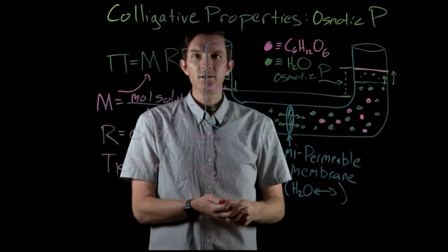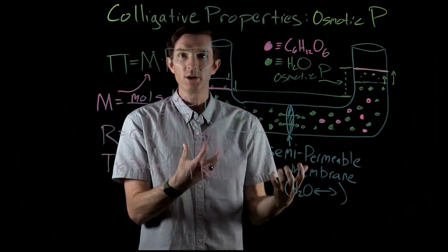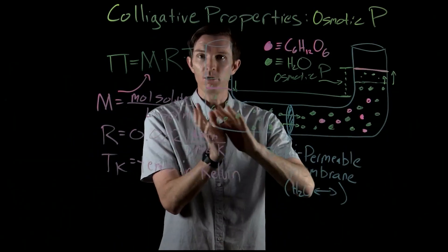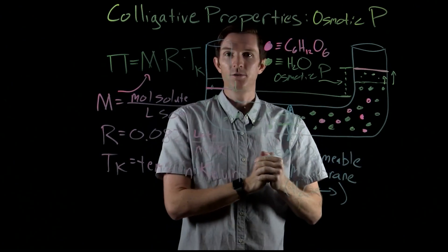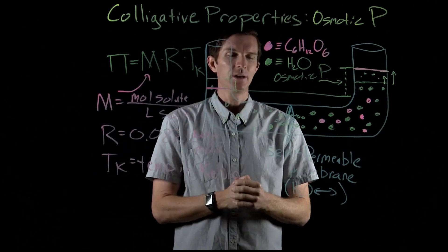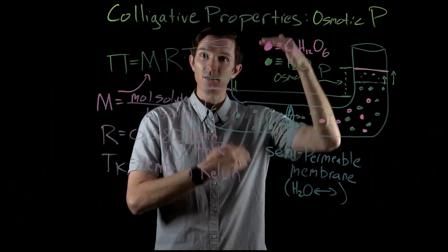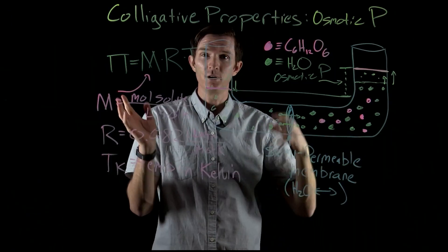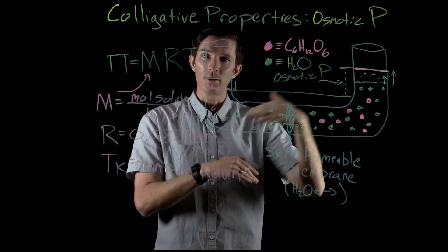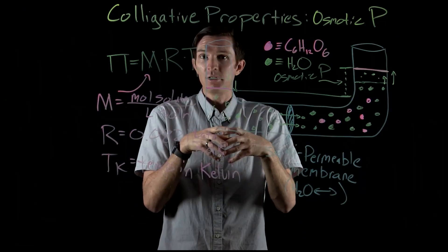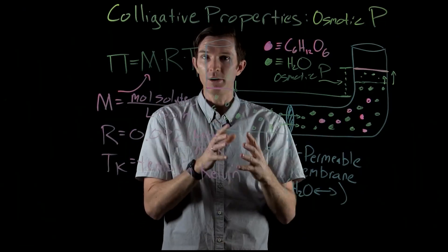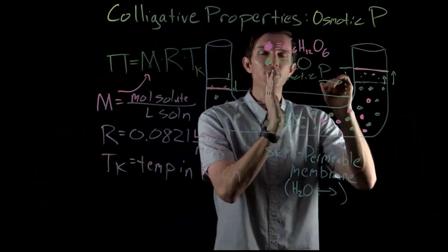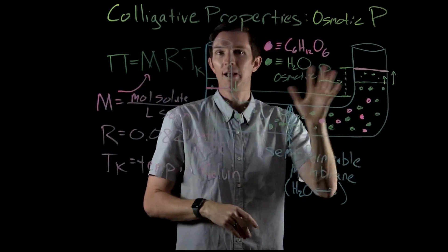We can see that this difference in concentrations causes pressure to be exerted as water wants to flow from a low concentration to a high concentration. This happens in cells and in biological systems because of differences in concentrations — the inside or outside of a cell may be higher or lower in concentration. Water is going to want to move inside or outside of that cell, and therefore the cell must have the ability to withstand that pressure, which is caused by the water moving from a low concentration to a high concentration to dilute it.